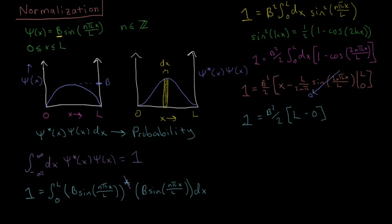So then rearranging that equation, moving things to the other side, what we end up with is b equals - multiply this two over, divide by L, take the square root - the square root of two over L.